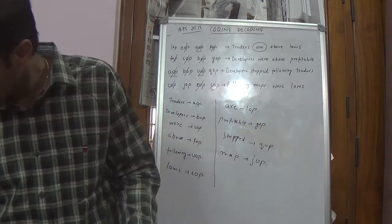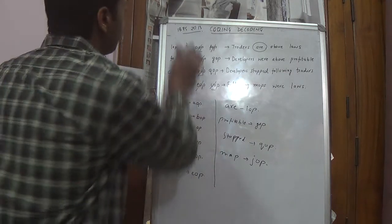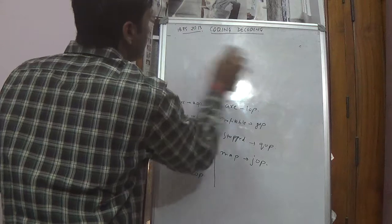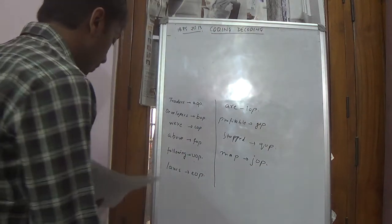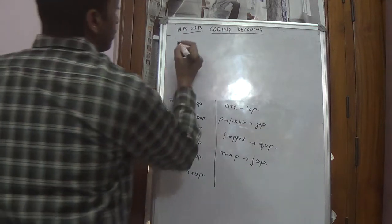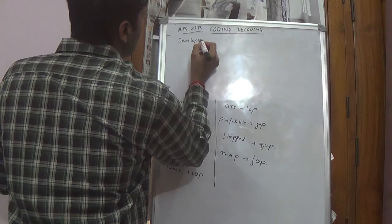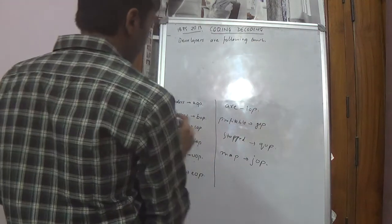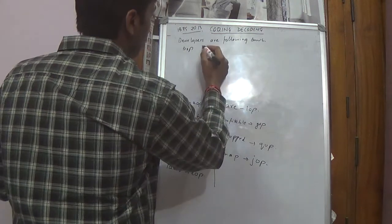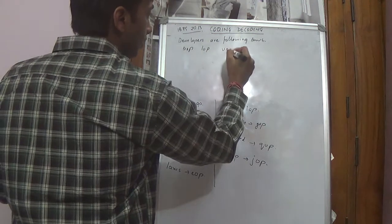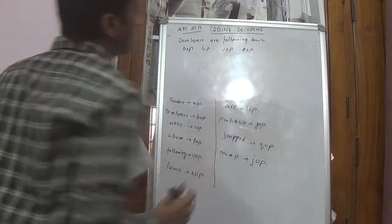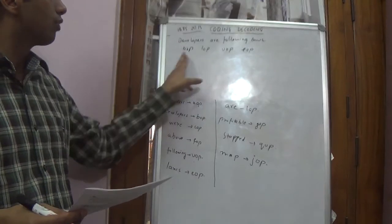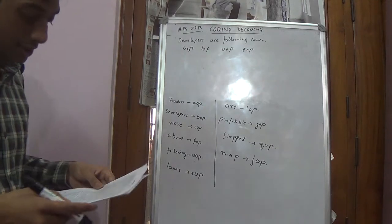So the first question says, developers are following laws could be written as. Developers is BOP. Are is LOP. Following is UOP. Laws is EOP. Now this could be in any order. Say EOP comes first, BOP comes last. So order doesn't matter. But you should have these 4 words. BOP, LOP, UOP, EOP. This is option 2.